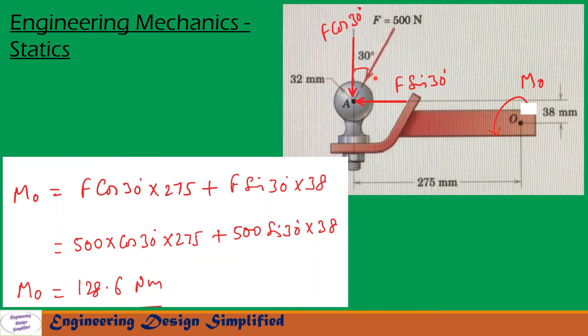Here the force F = 500 N is applied at 30 degrees from vertical. Now let us take horizontal and vertical components of this force F. Its horizontal component is F sin 30, and its vertical component is F cos 30. This acts vertically downwards and this acts towards the left.